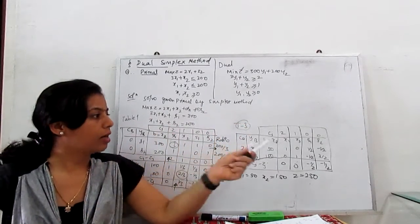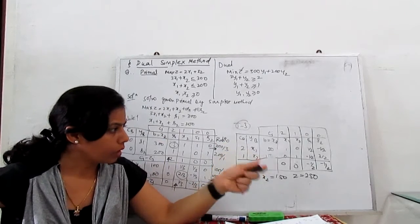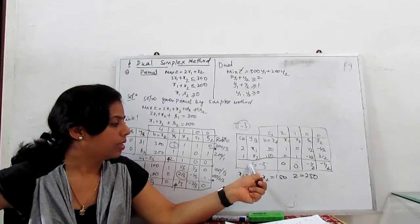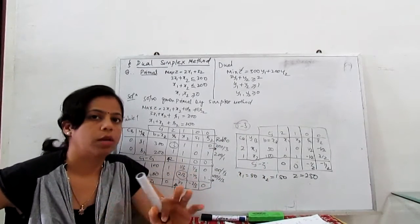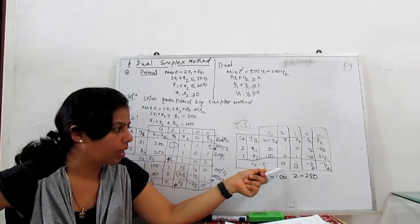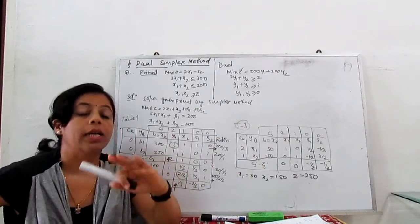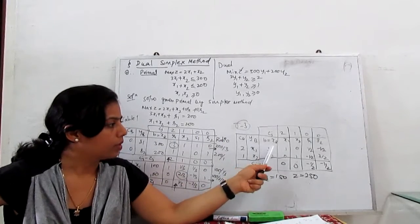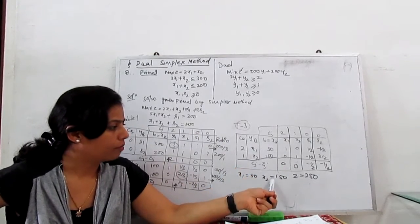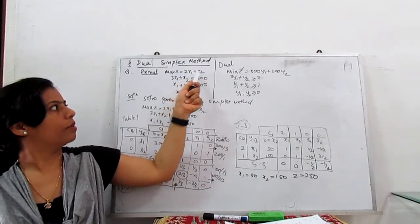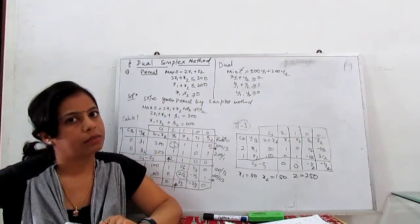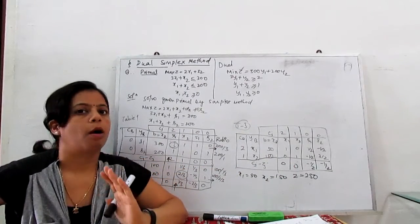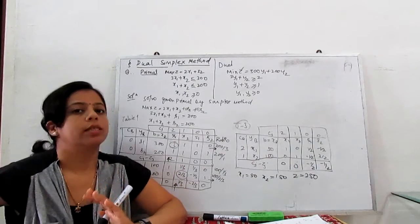We write table 3. In the third table, all cj − zj values are non-positive — there are no positive values. So our iterations stop here. The optimal solution is x1 = 50, x2 = 150. Substituting these values gives maximum z = 250. That is the solution using the primal simplex method.